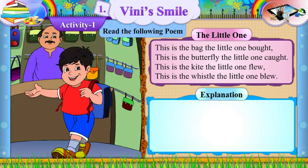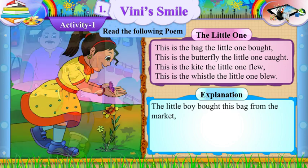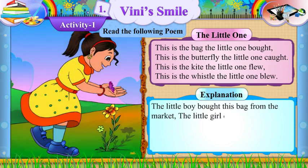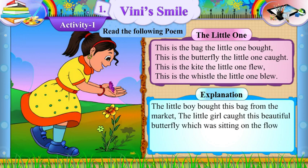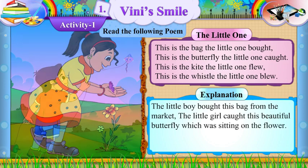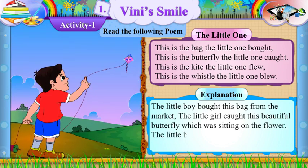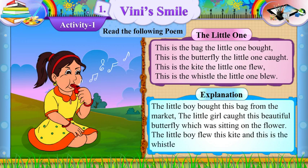Explanation: The little boy bought this bag from the market. The little girl caught this beautiful butterfly which was sitting on the flower. The little boy flew this kite, and this is the whistle which the little girl blew.